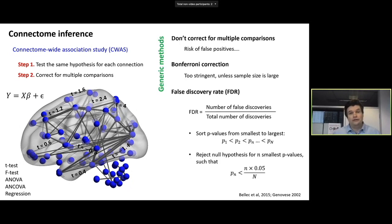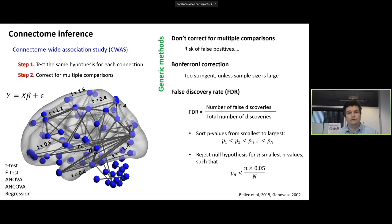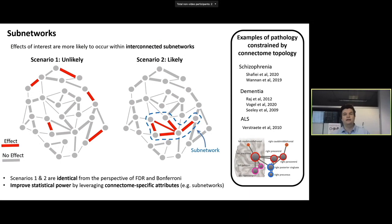How do we deal with the multiple comparison problem? One school of thought is that we don't need to correct for multiple comparisons — I don't think that's a good idea, as it risks false positives. Another approach is Bonferroni, which is generally too stringent unless we have really large sample sizes. A good approach is the false discovery rate, or FDR. This can be computed efficiently — it just requires ordering p-values and applying a threshold, and many of you have likely come across FDR already. However, these generic methods don't take into account connectome-specific attributes.